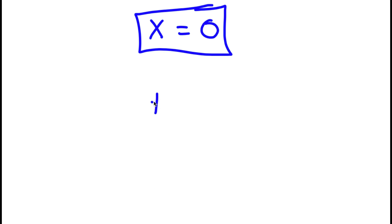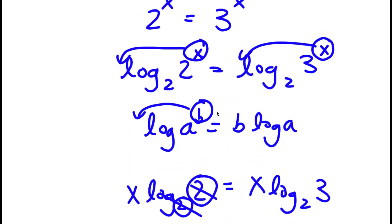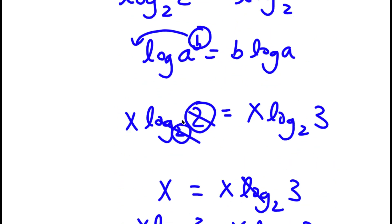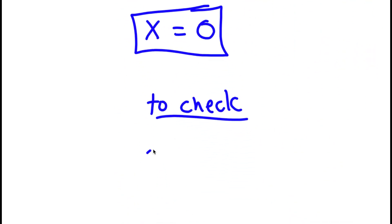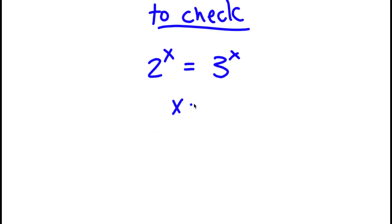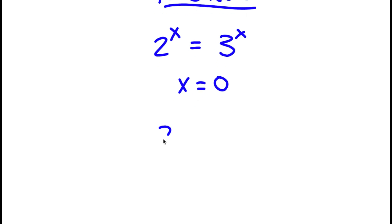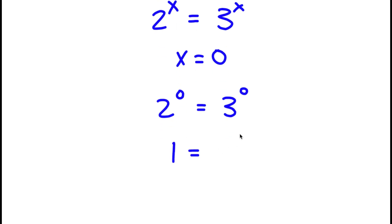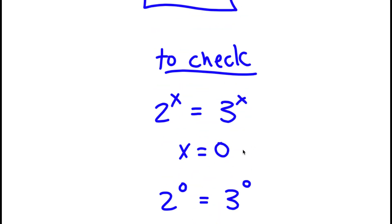Now to check: my equation is 2 to the power of x is equal to 3 to the power of x, and we know x is 0. So I have 2 to the power of 0 is equal to 3 to the power of 0. Remember, anything to the power of 0 is simply equal to 1. So 2 to the power of 0 equals 1, and 3 to the power of 0 also equals 1. So I have 1 is equal to 1, meaning my solution is correct.